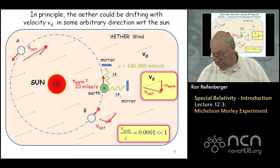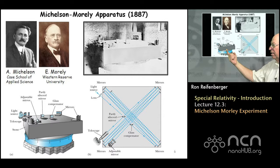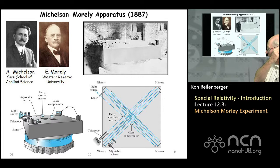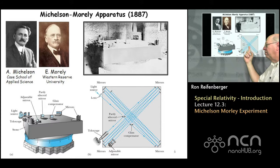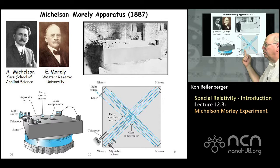The apparatus used in 1887 — there's a very famous picture of it on many websites — is just a large slab of concrete with partially silvered mirrors, totally reflecting mirrors, a light source, and a viewing screen. The basic idea is that the light source sends a beam of light that reflects back and forth on mirrors. That light beam is first split by a partially silvered mirror, producing a second light beam that travels back and forth in a direction perpendicular to the first. These two light beams then recombine and are observed on a screen with a viewing telescope.